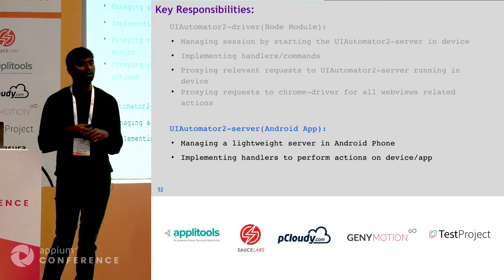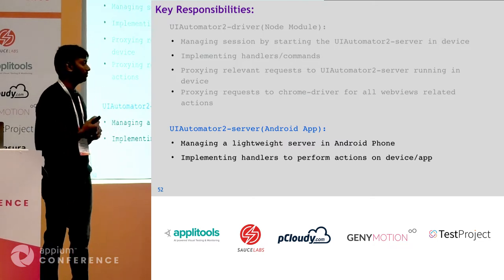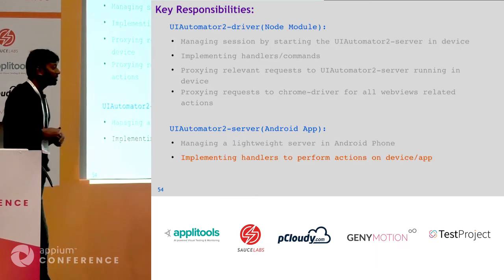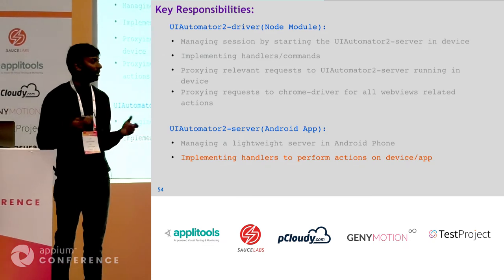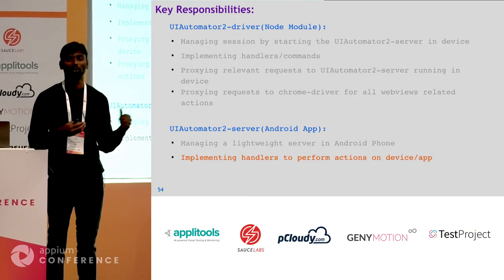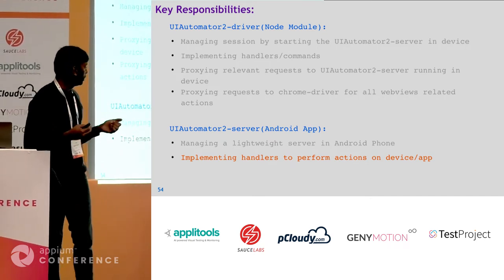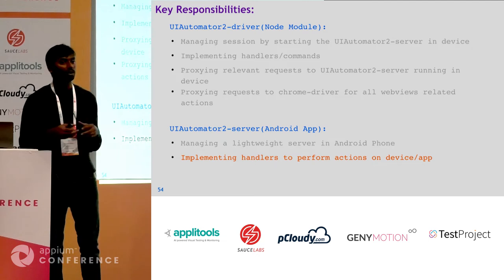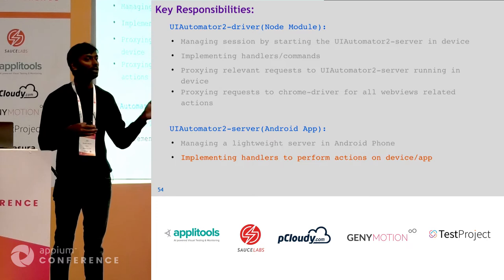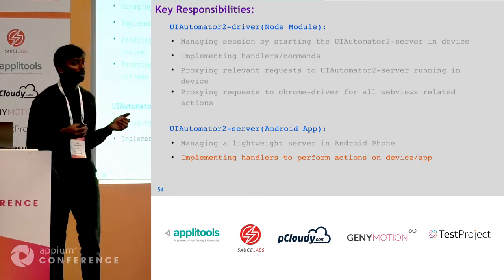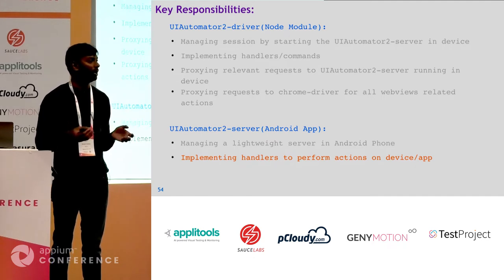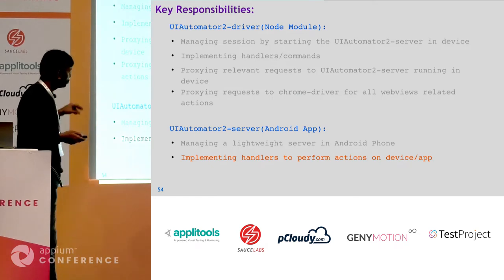The UiAutomator2 server is responsible for providing a lightweight server. It manages that lightweight server and gives the implementation for the handlers — things like find element or click operations. The driver module manages the entire session and proxies requests to the corresponding module, while the server module manages a lightweight server in the device and provides the handler implementations.